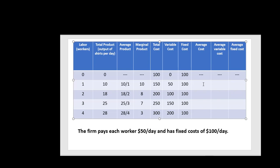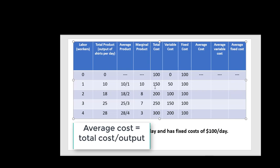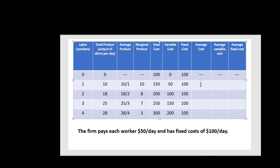Let's move on to average cost. Average cost is total cost divided by output. So 150 divided by 10. Average cost at 18 units of output is 200 divided by 18. Average cost at 25 units of output is 250 divided by 25. And finally, at 28 units of output, our average cost is 300 divided by 28.